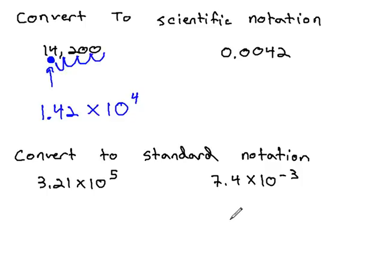Because we were dealing with a big number, we need a positive exponent to show that multiplying by 10 to the 4th will make this 1.42 into a big number.